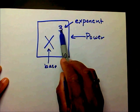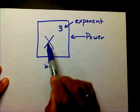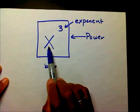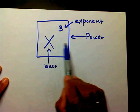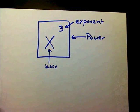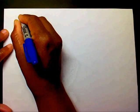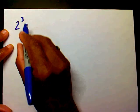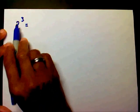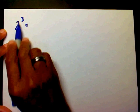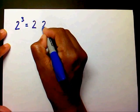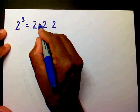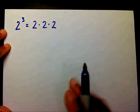What this exponent does is it basically tells the base how many times to write itself down and to multiply. So let's try one. I have 2 to the third — what does this mean? Well, this means that you're going to write 2 down 3 times and you're going to multiply them. That's all it means.